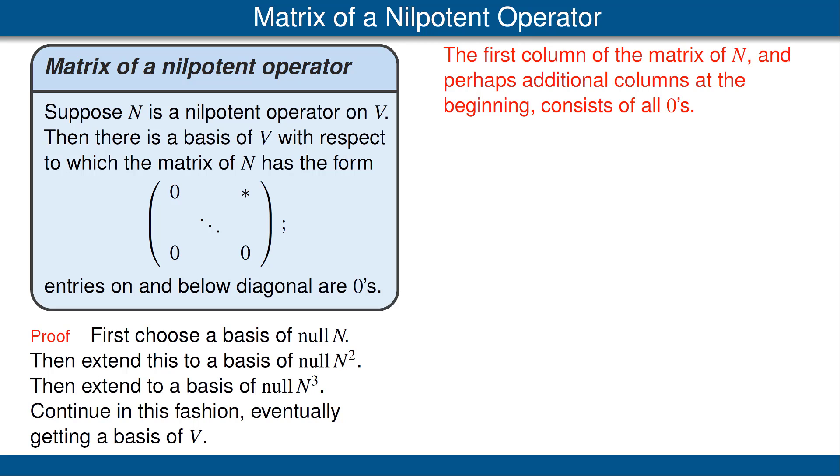Now let's think about the matrix of N with respect to the basis we have just chosen. The first column of N and perhaps additional columns at the beginning consists of all zeros because those first basis vectors are elements of the null space of N and thus N applied to each of those vectors gives 0.